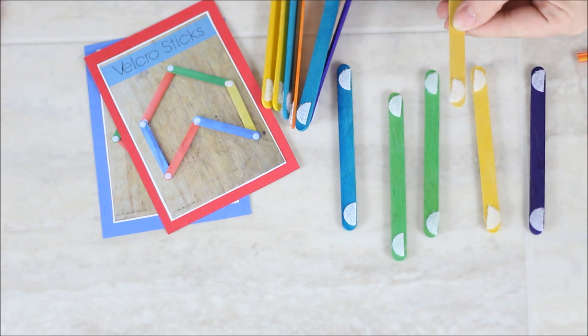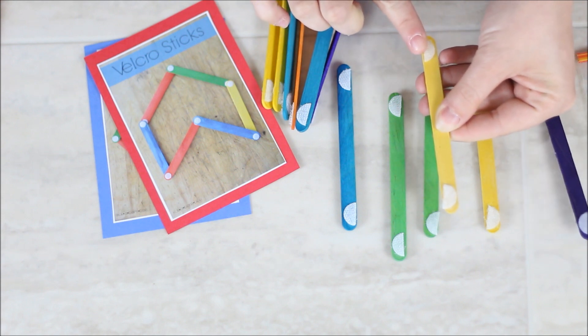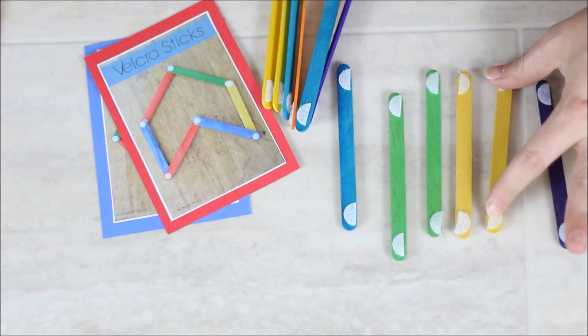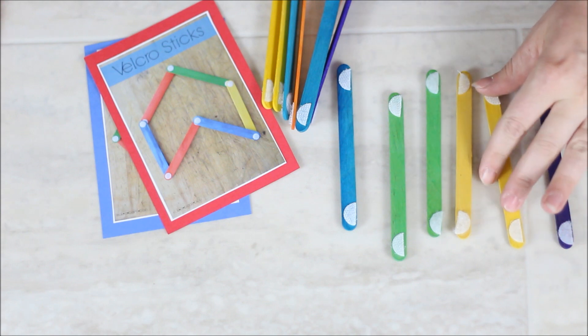Glue them onto the ends of your popsicle stick. You want a fuzzy side, and then on the reverse you do two half dots with the rough side of the Velcro.